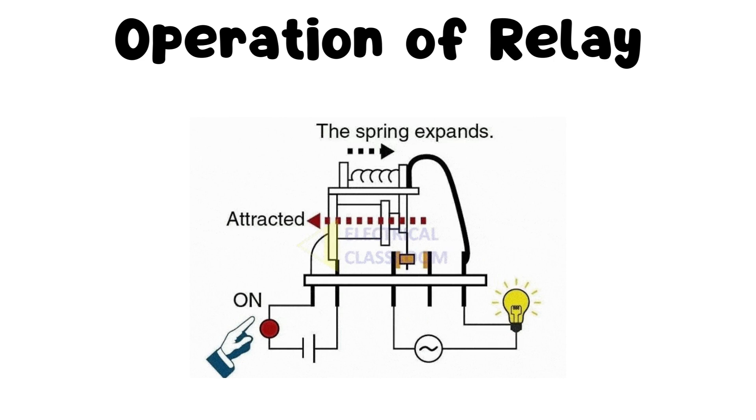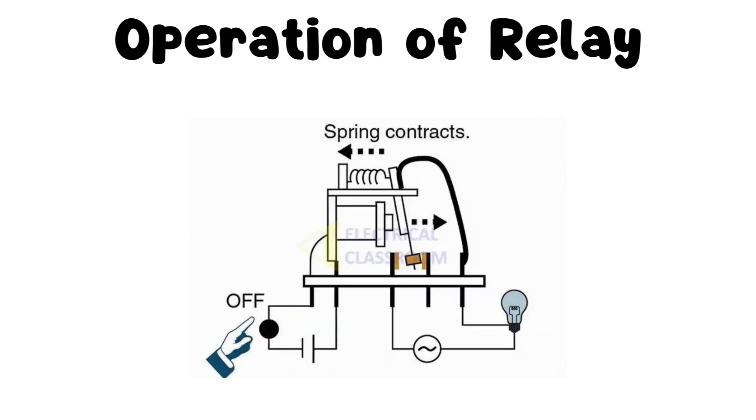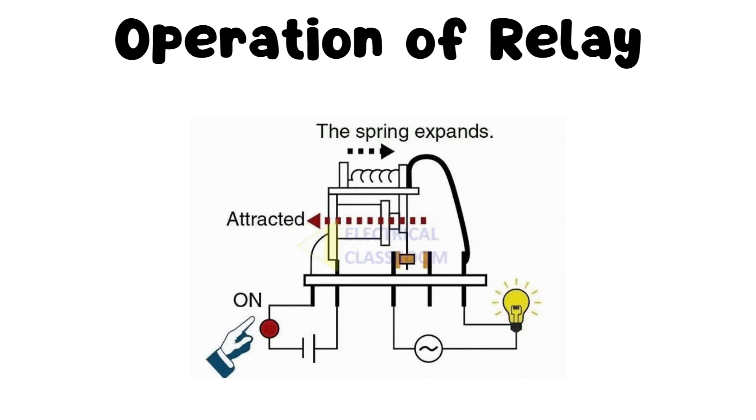Operation of relay: When a current flows through the coil, it generates a magnetic field that pulls the armature towards it. This movement of the armature causes the contacts to either open or close.